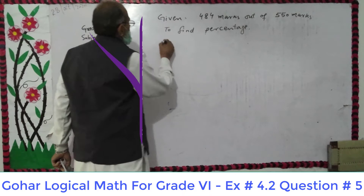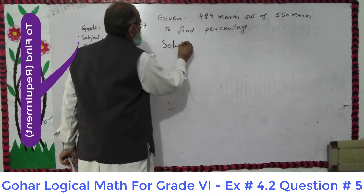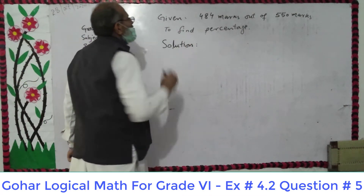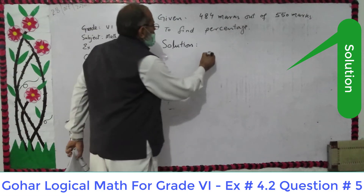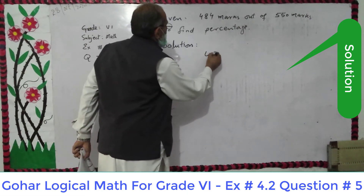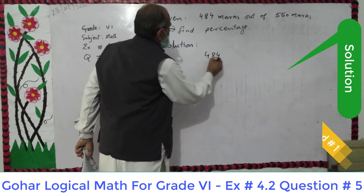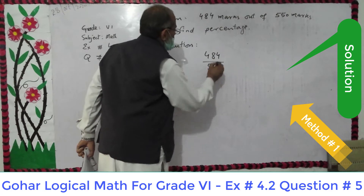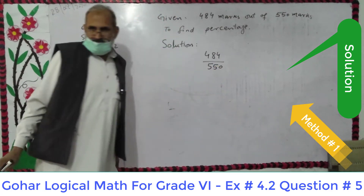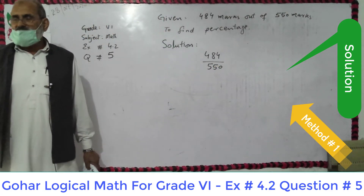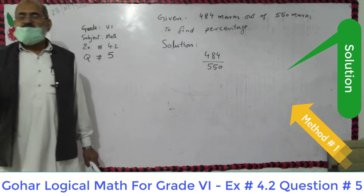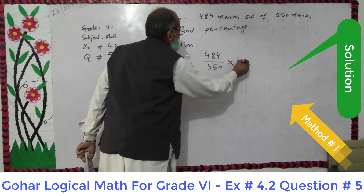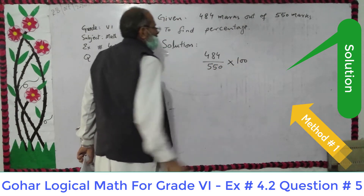Now we go to the solution. The third step is the solution. She got 484 out of 550. What is the ratio out of 100? So we multiply it by 100.